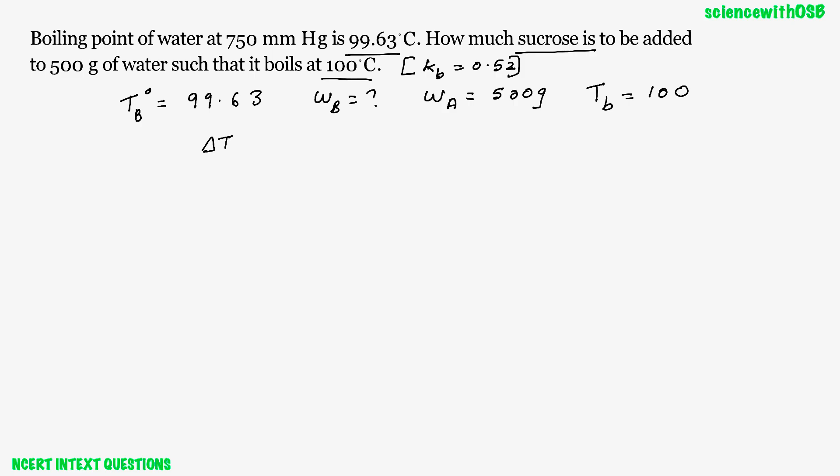Okay, before that we can find the delta TB. What is delta TB? It is TB minus TB standard. What is TB? 100 minus 99.63. What is that? 0.37, right. Now directly use the equation for delta TB.